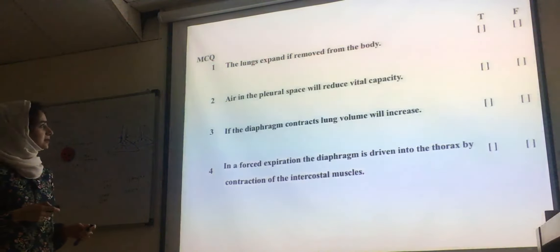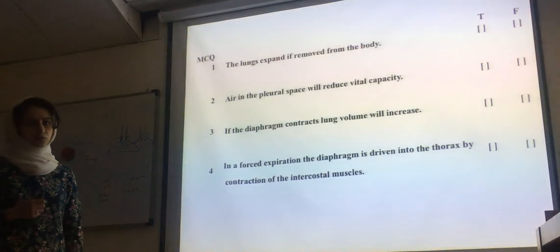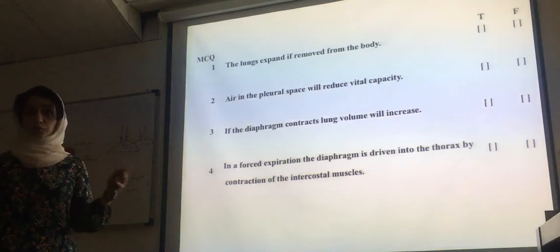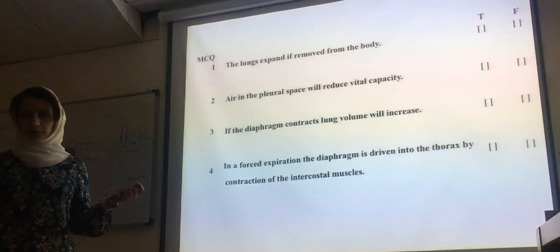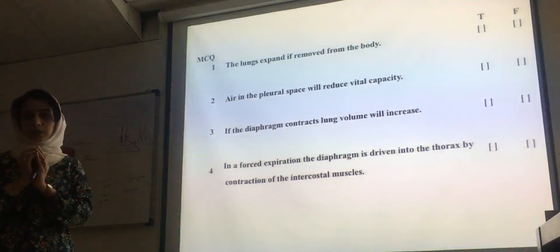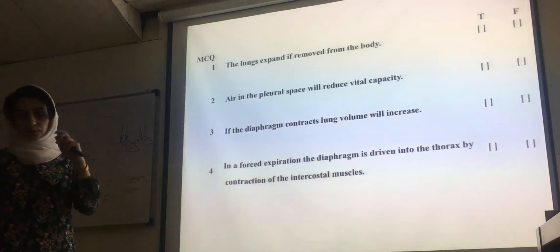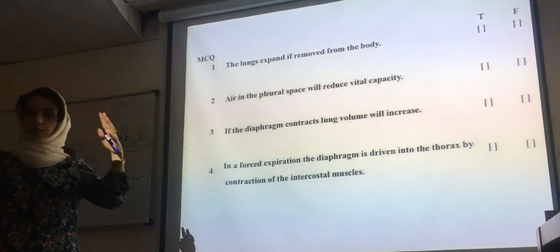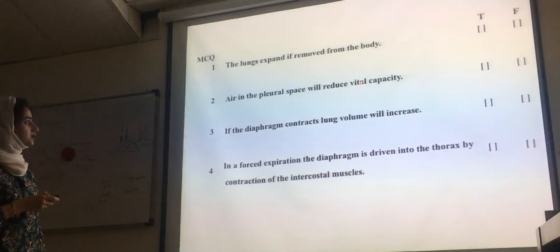Now for the MCQs — true or false. First: the lungs expand if removed from the body. This is false. If we remove the lung from the thorax, it will recoil inward because of its elastic properties. The thorax, on the other hand, recoils outward. Second: air in the pleural space will reduce vital capacity. This is true — air in the pleural space pushes on the lung, the lung cannot expand, causing a decrease in vital capacity.